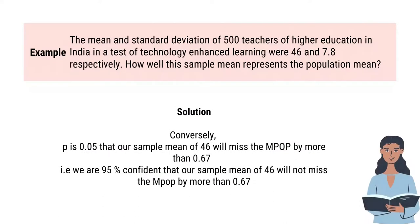Conversely, P is 0.05 that our sample mean of 46 will miss the population mean by more than 0.67. That is, we are 95% confident that our sample mean of 46 will not miss the population mean by more than 0.67.